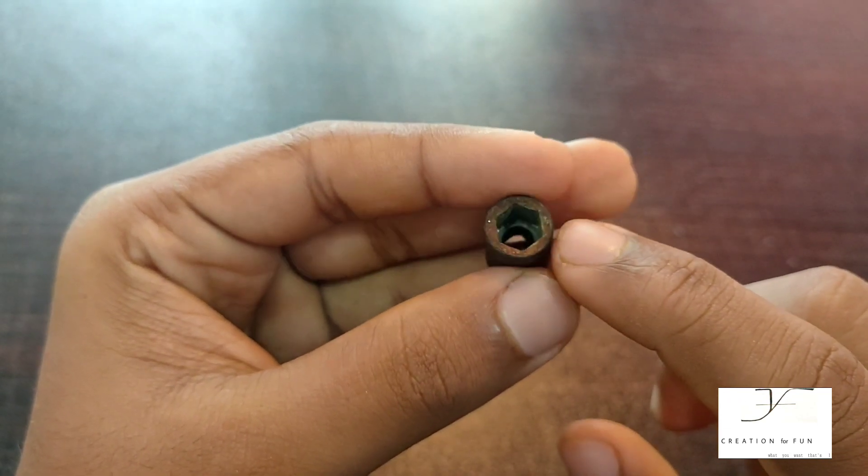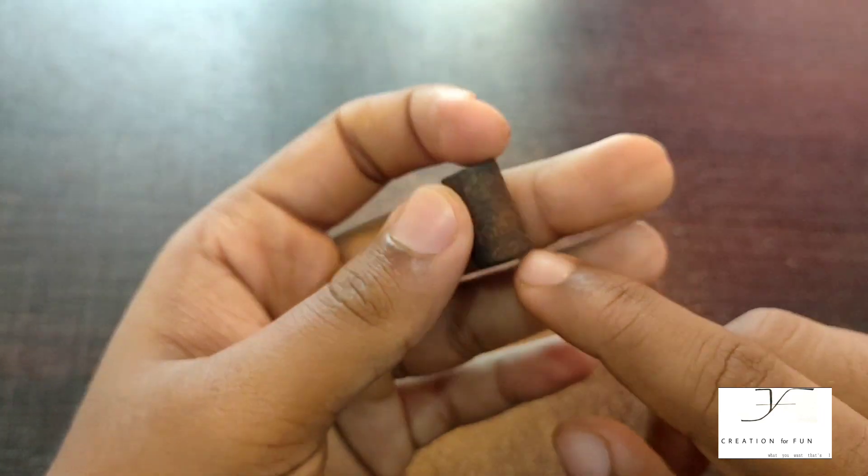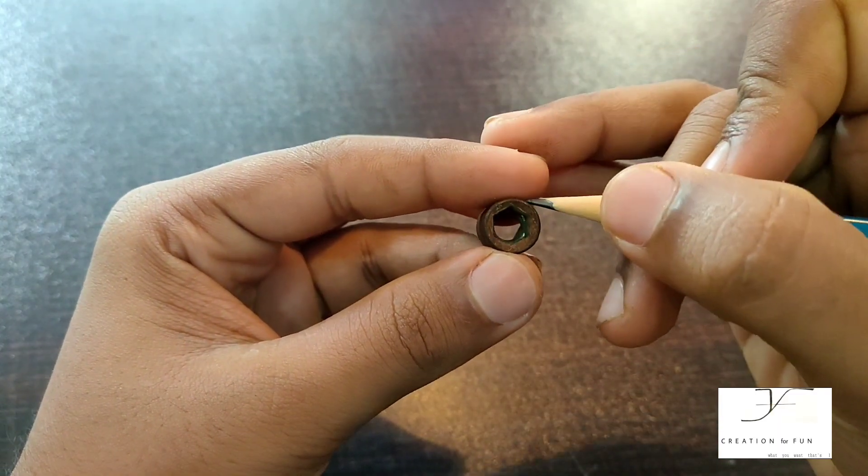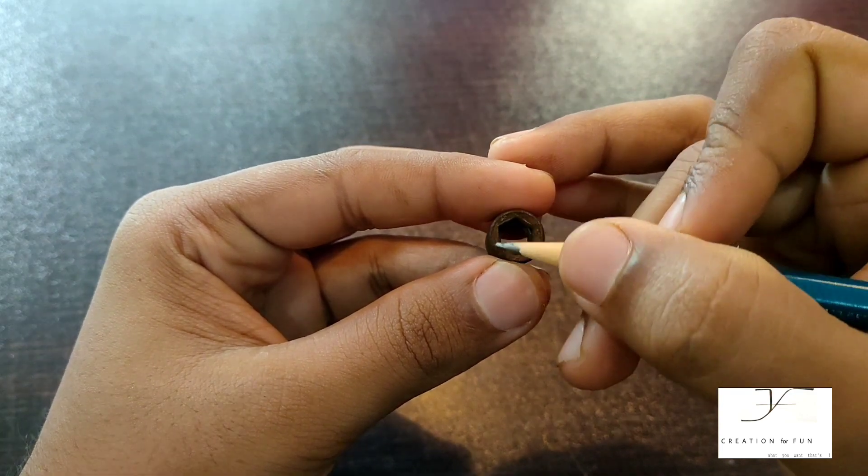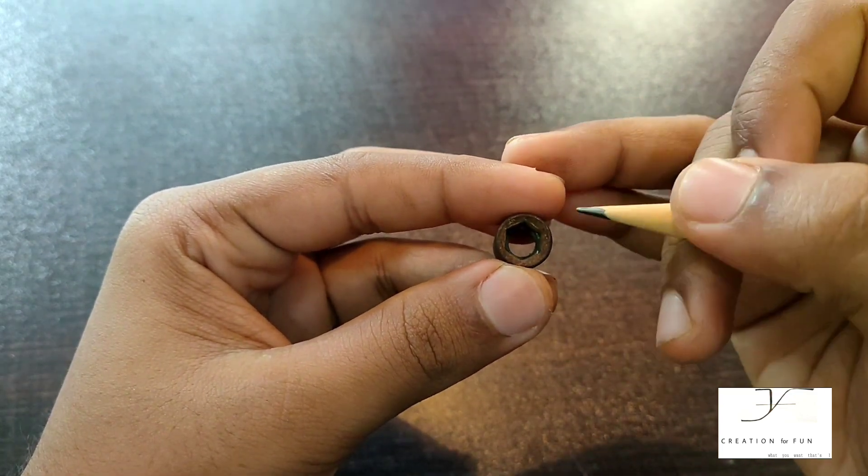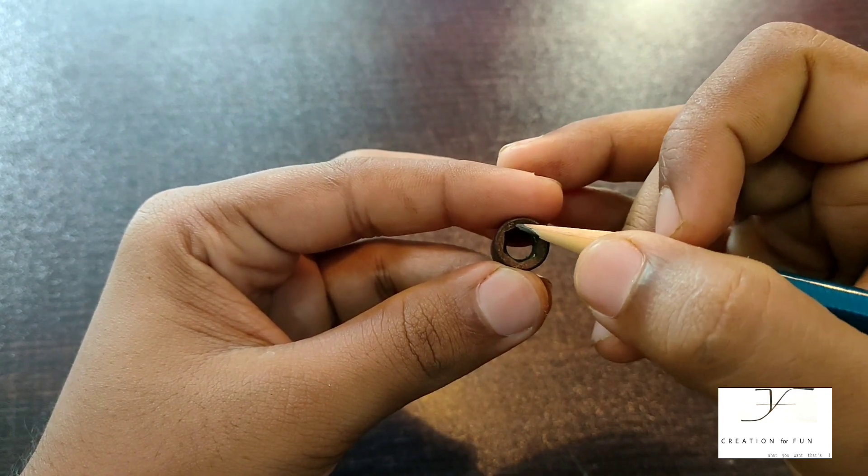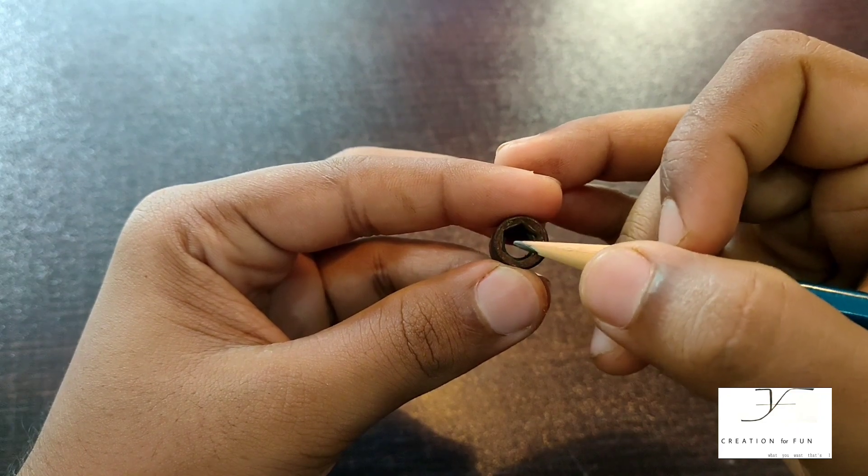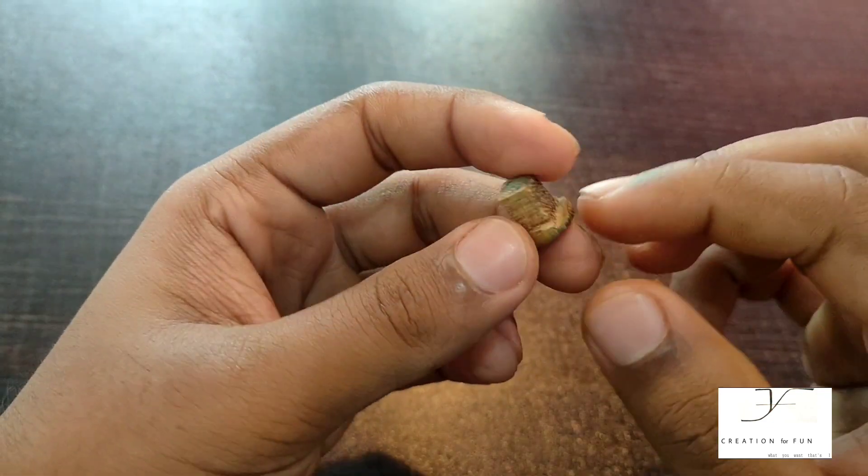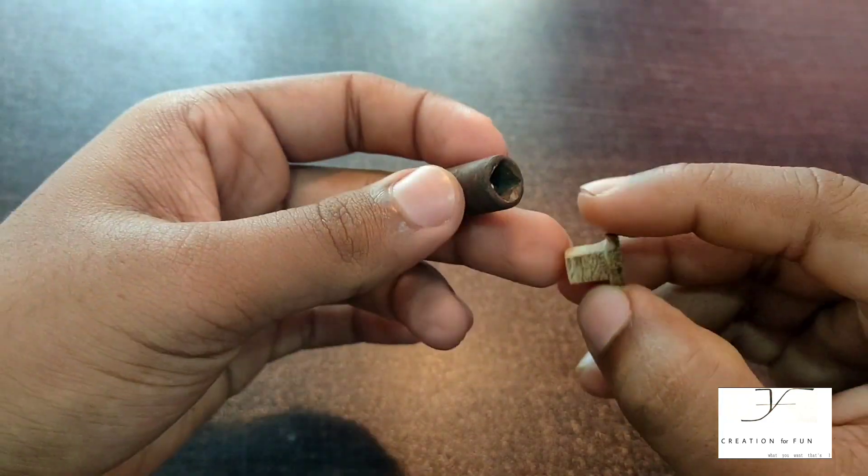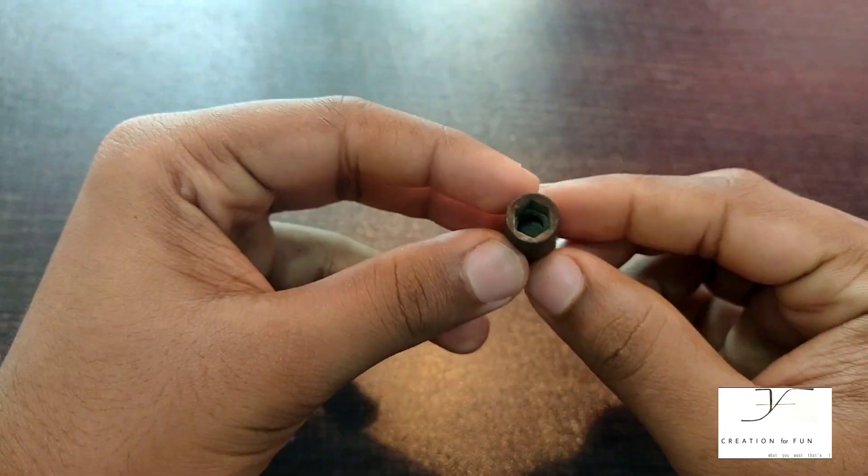Let's make the hexagon shape with a hole in it. The hexagon shape matches the pencil shape. We cut it to fit the pencil properly. These metal pieces will connect to the DC motor.